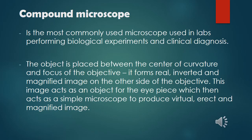The objective forms a real, inverted, and magnified image on the other side. This image acts as an object for the eyepiece, which then acts as a simple microscope to produce a virtual, erect, and magnified image.